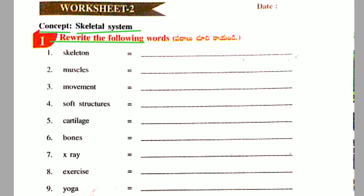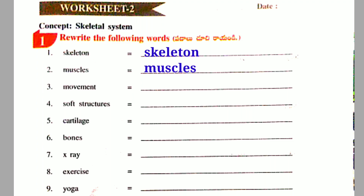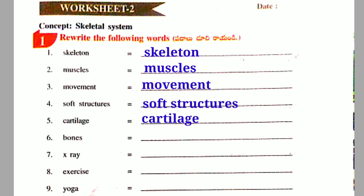Rewrite the following words: Skeleton, Muscles, Movement, Soft Structures, Cartilage, Bones, X-Ray.